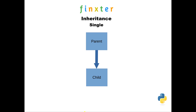The first of the five types is single inheritance — the simplest and most likely one you'll come across. It's parent and child: the parent gives the inheritance, the child receives it, so any attributes and methods the parent has, the child is able to access.